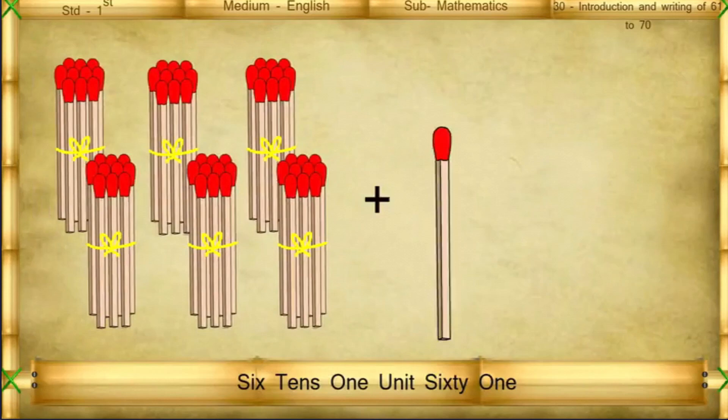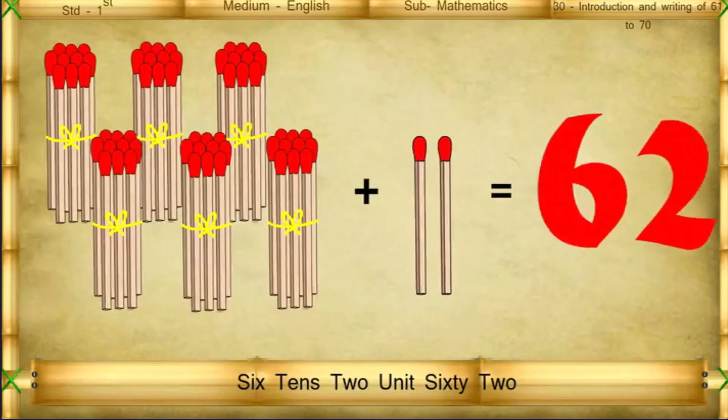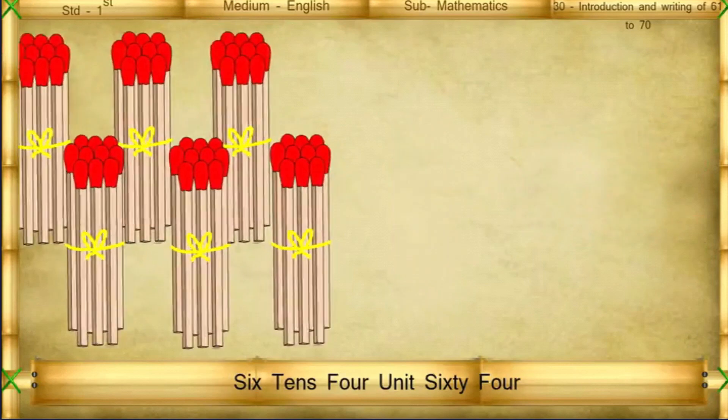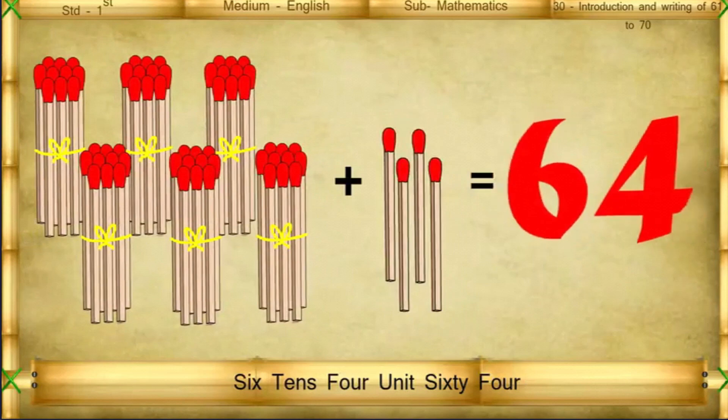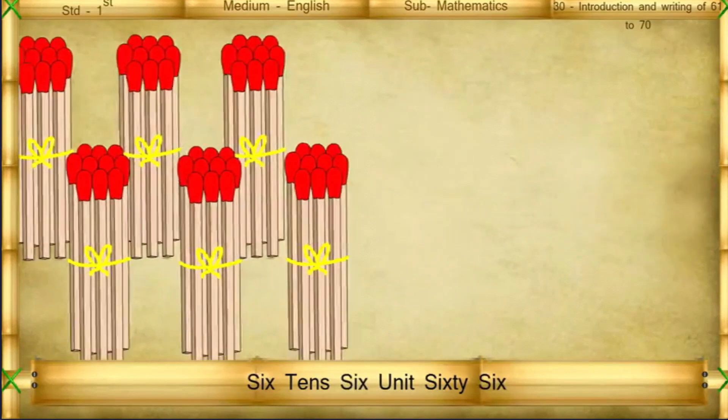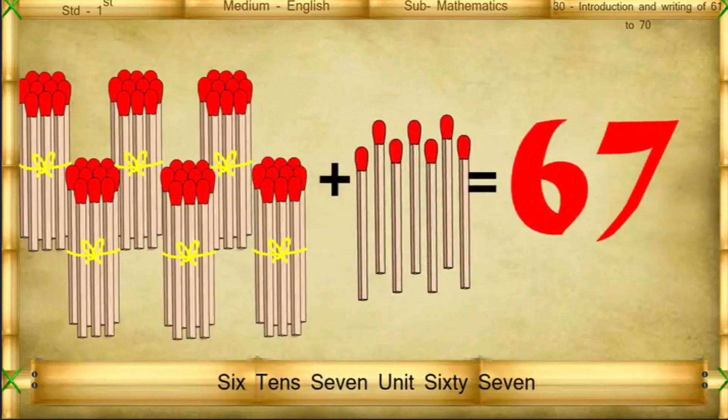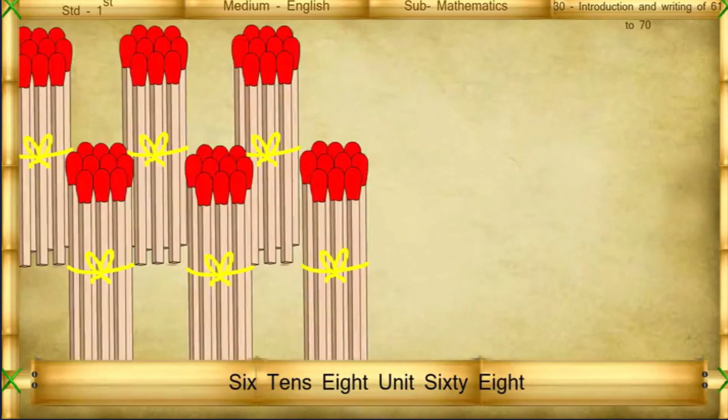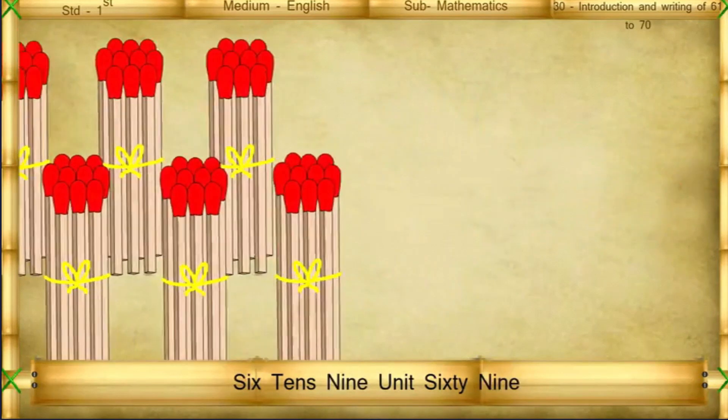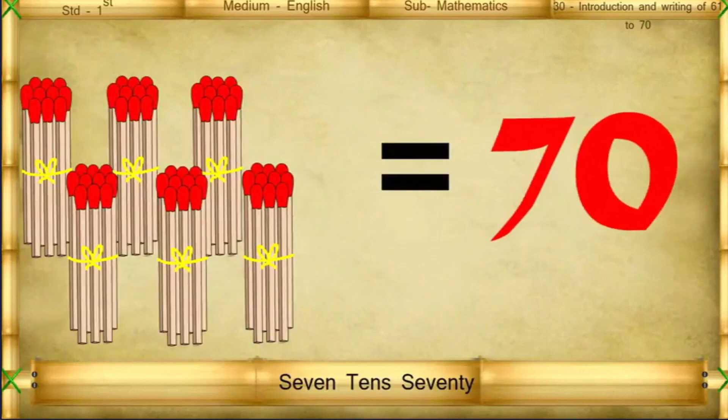6 tens 1 unit = 61, 6 tens 2 units = 62, 6 tens 3 units = 63, 6 tens 4 units = 64, 6 tens 5 units = 65, 6 tens 6 units = 66, 6 tens 7 units = 67, 6 tens 8 units = 68, 6 tens 9 units = 69, 7 tens = 70.